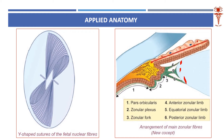If this attachment is disrupted, the lens will either subluxate or dislocate. The difference: if there is any remaining attachment and the lens is still seen in the patellar fossa, it is subluxation. If there is no attachment whatsoever and no presence in the patellar fossa, it is called dislocation. Also importantly, these zonules are the tertiary vitreous, which holds and supports the lens.